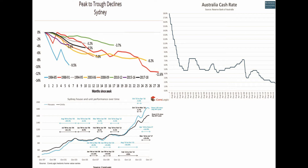Interest rates were cut significantly from 7.25 percent in March 2008 to a low of 3 percent in October 2009 during the GFC crisis. Property prices kept increasing from January 2009 to October 2010 by 15.8 percent. Interest rates then rose from 3 percent in October 2009 to 4.5 percent by October 2010, and property prices declined 3.1 percent from October 2010 to August 2012.